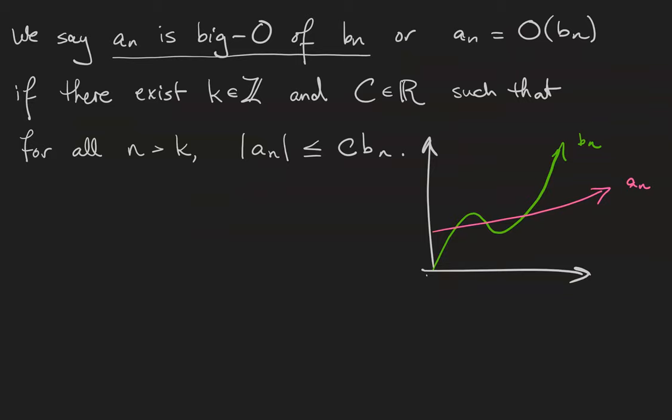The whole idea of asymptotics is in comparing growth rates of sequences and functions. We say that aN is big O of bN, or that aN equals O(bN), though that equal sign is not quite used correctly here, if there exists an integer k and a real number c such that for all n past the threshold k, the absolute value of aN is less than that multiple c of bN.